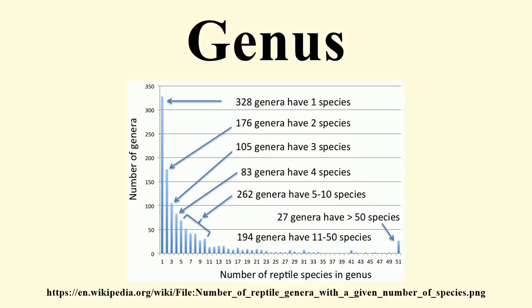A genus is a taxonomic rank used in the biological classification of living and fossil organisms in biology. In the hierarchy of biological classification, genus comes above species and below family.